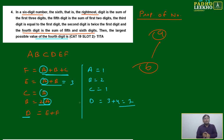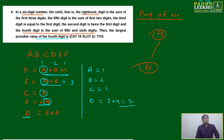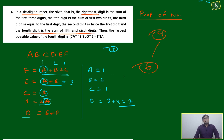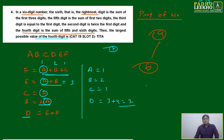If a=1, then automatically: c=1, b=2, e=3, f=4. So d = e+f = 3+4 = 7. The maximum value of d is seven. For all these types of questions you can mark the answer very easily.